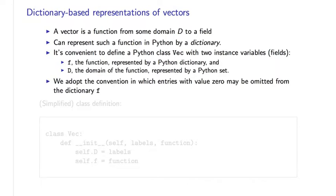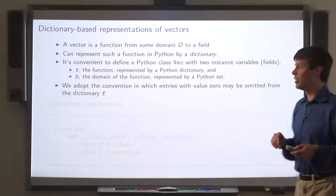And here we're going to adopt the convention that entries whose values are zero don't have to be represented in the dictionary. This is our sparsity representation.